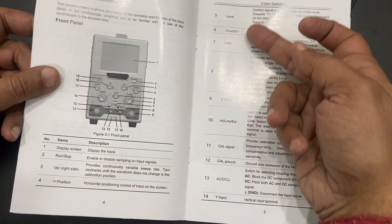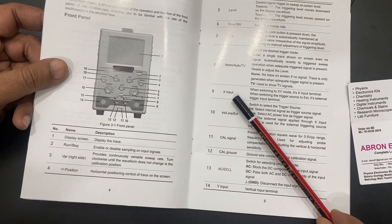This display and level, lock, normal, auto, X, Y. All these things are explained very well.